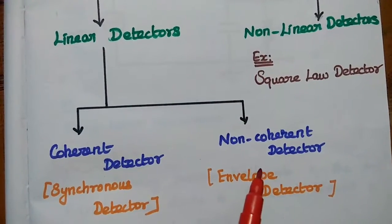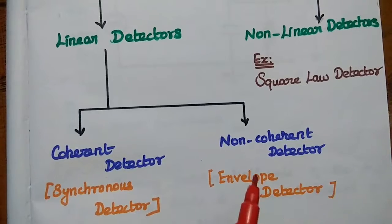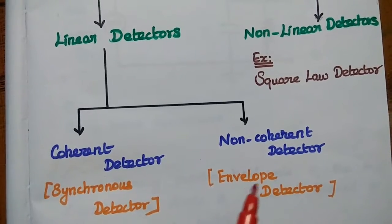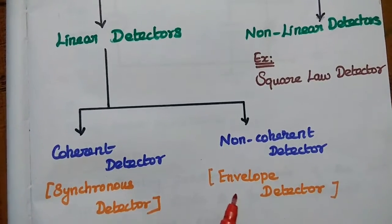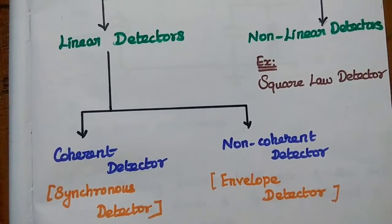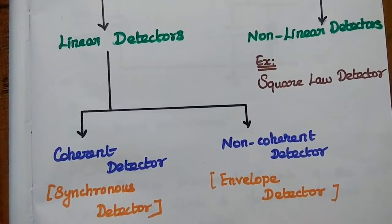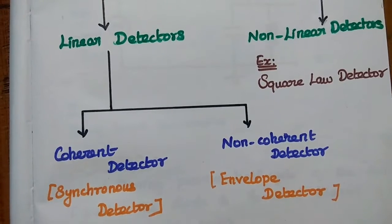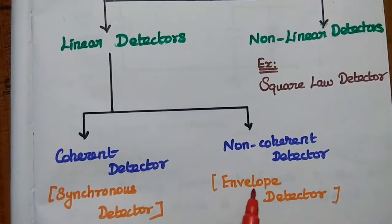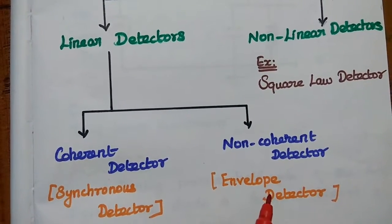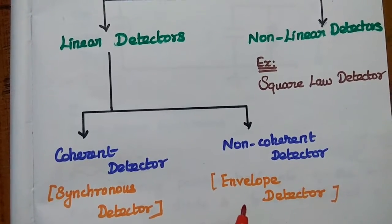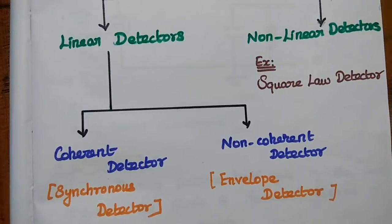For the noncoherent detector, there is no dependency between the carriers in the transmitter and receiver. The example for this noncoherent detector is the envelope detector.